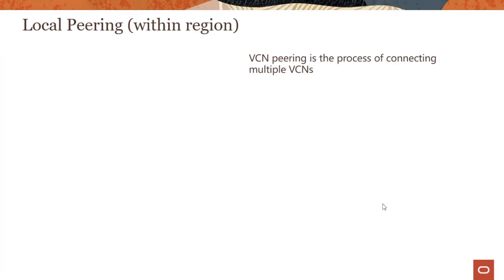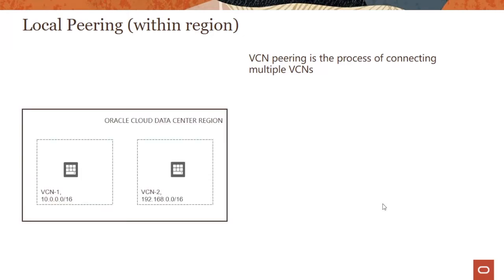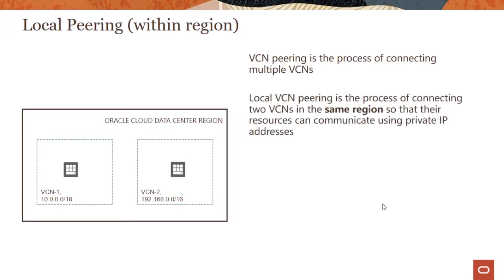Let's start with local peering. As the name suggests, local peering basically means you are connecting multiple VCNs within the same region. The graphic shows a region Oracle Cloud data center with VCN1 having an address space of 10.0.0.0/16 and VCN2 with an address space of 192.168.0.0/16. Connecting these two VCNs is called local peering. Resources within these two VCNs, both in the same region, can communicate using private IP addresses so they don't have to go through public IP addresses.